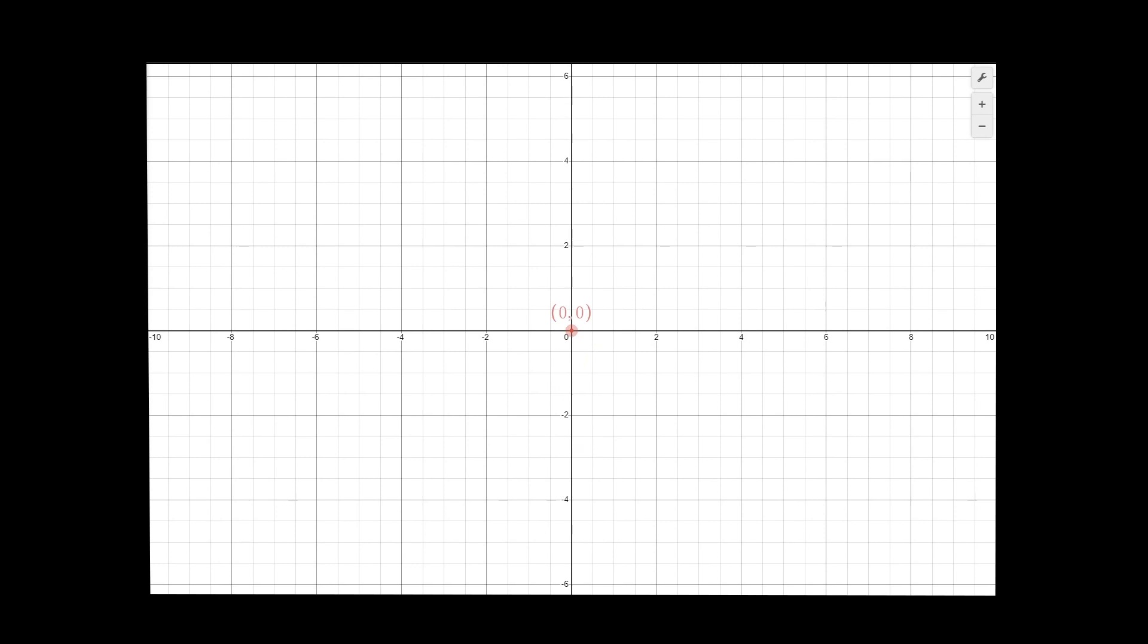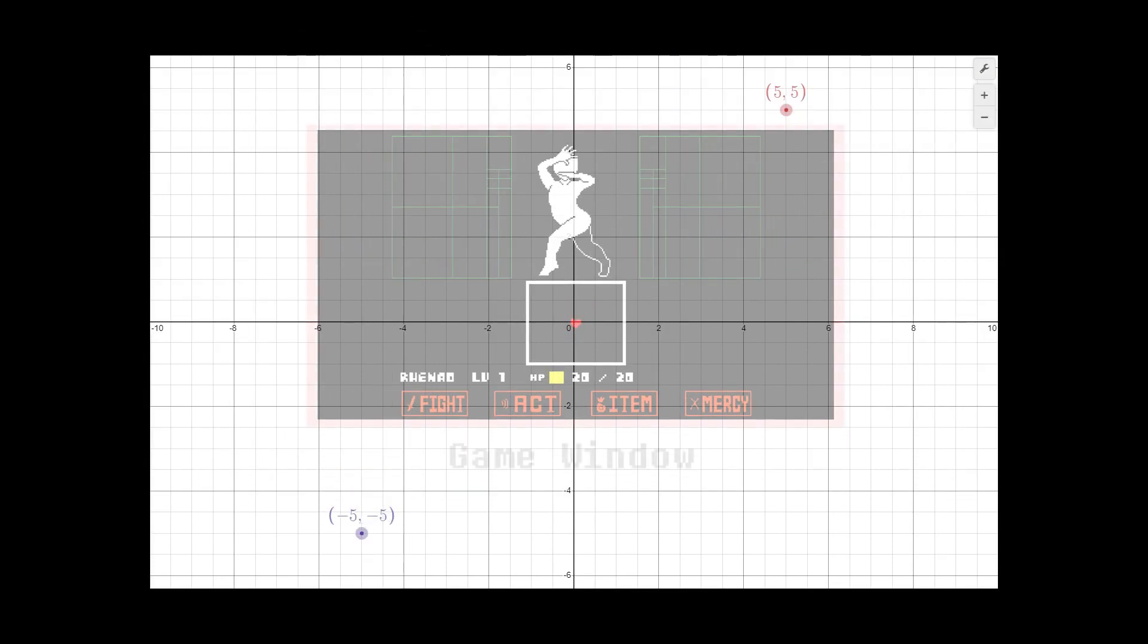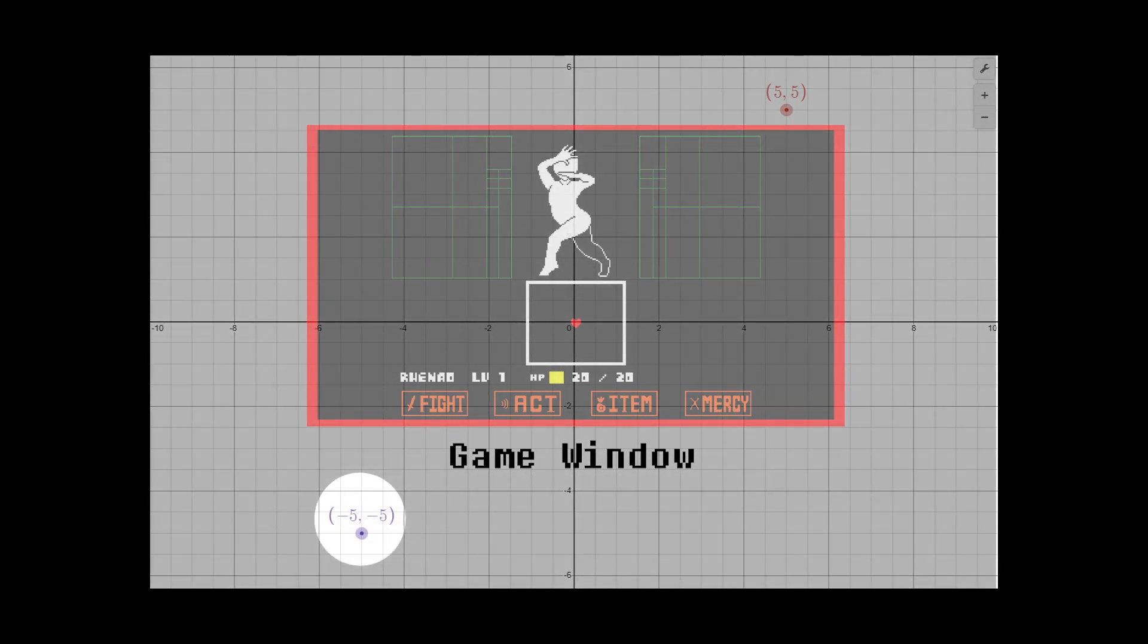The origin in Unitale, so where the x and y-axis meet, is the center of the arena, where your soul is located when the wave starts. Be careful when setting x and y to very high or very low values. The bullet might not show up. It still spawns, but it's gonna be somewhere outside of your game window.